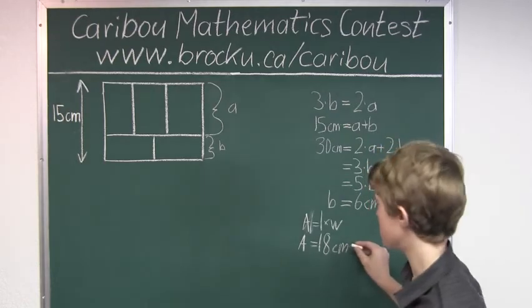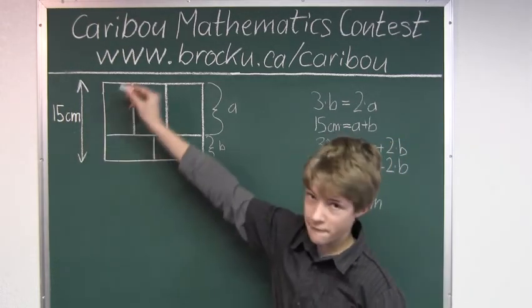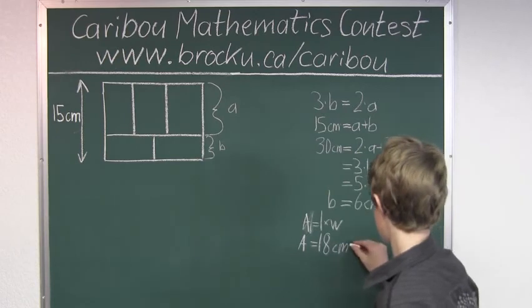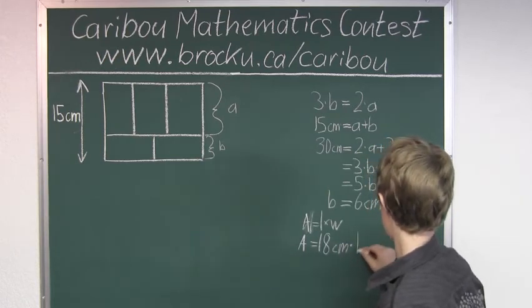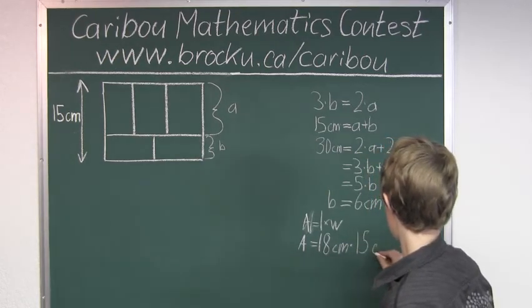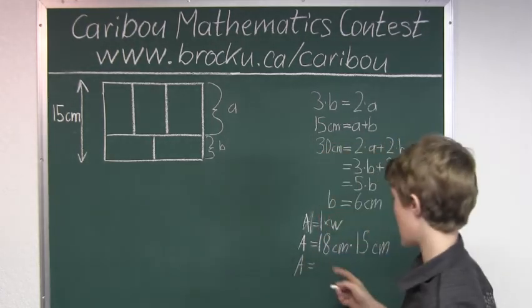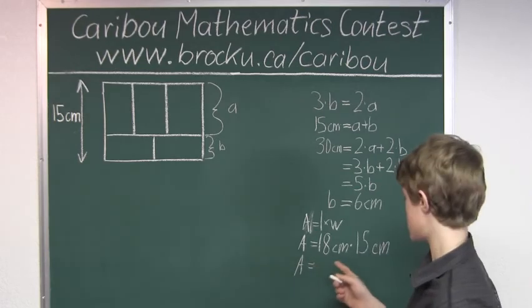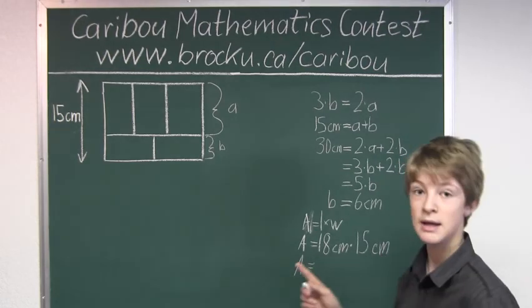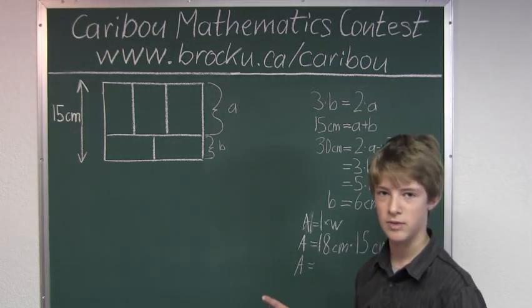And you would multiply that by the width, which is 15 centimeters. So now 18 centimeters times 15 centimeters is 270 centimeters squared.